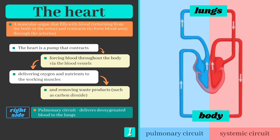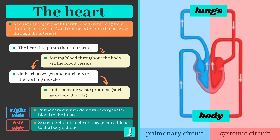The right side, or pulmonary circuit, delivers blood to the lungs where it picks up oxygen before returning to the left side, the systemic circuit, which sends the newly oxygenated blood to the body's tissues.